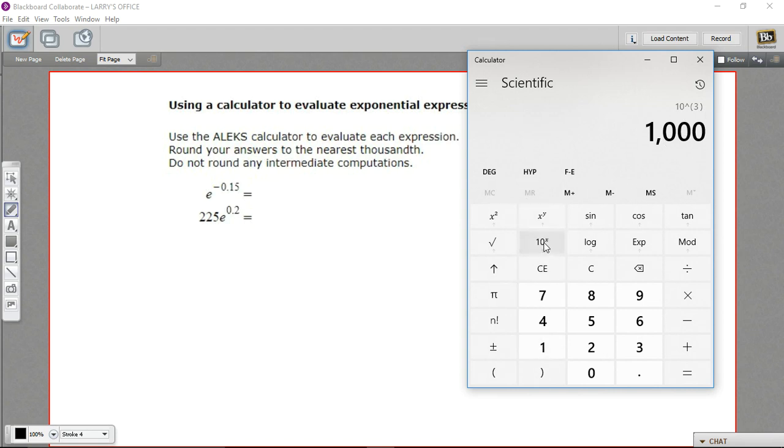Well, hiding behind this 10 to the x is an e to the x key. And that's what we want. So I can just hit this little up arrow that on the Windows calculator means show me all the inverse or second functions.